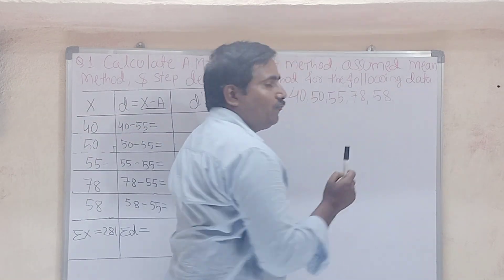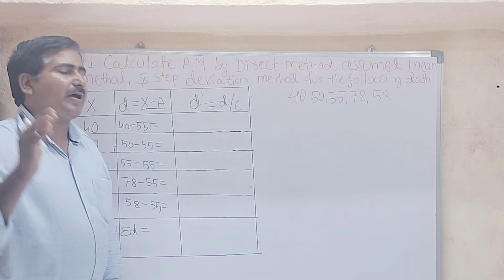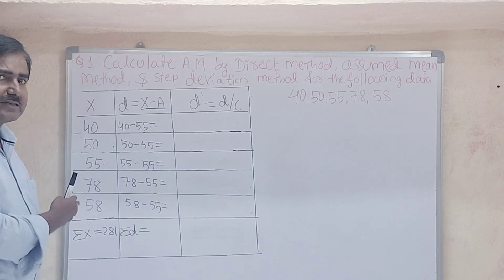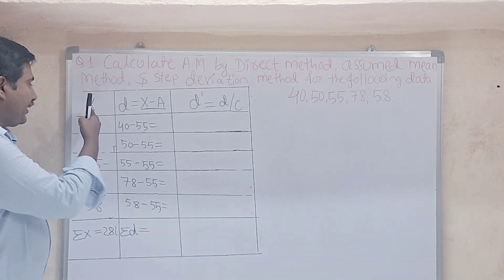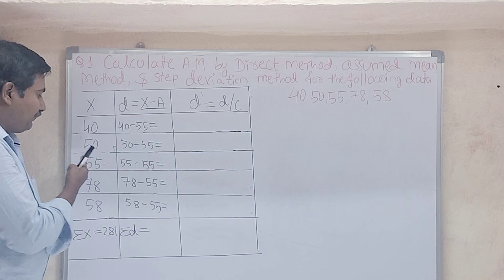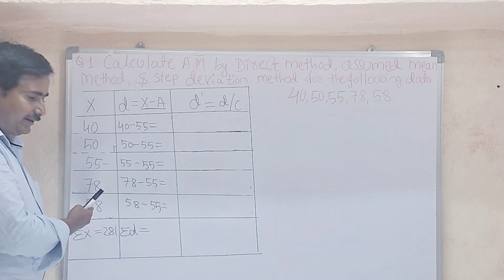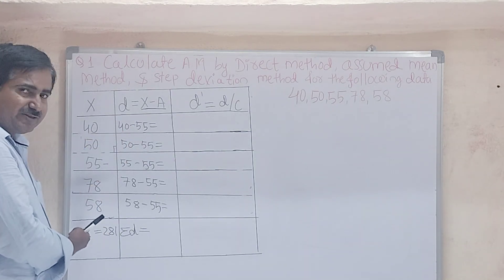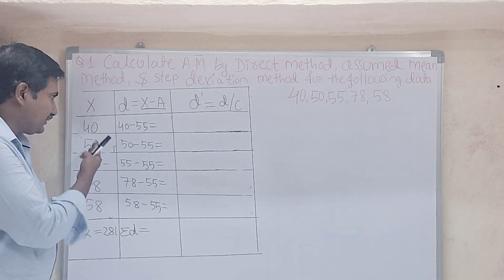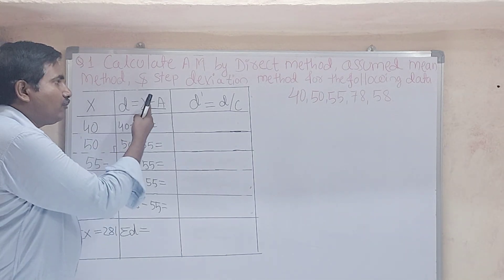Total five numbers. We write them in the X column: 40, 50, 55, 78, 58. The total summation of X is 281.